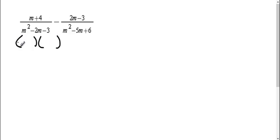So I'm making my two parentheses. I have an M and an M. When I break this down, it's going to be minus 3 plus 1. Okay, when I break this one down, I have an M and an M. It's going to be minus 3 minus 2.